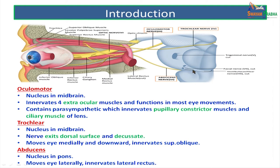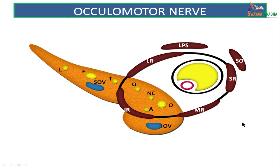The abducent nerve, the nucleus of which is in the lower pons, moves the eye laterally by supplying the lateral rectus. Before going into detail of these nerves, we should know how all these nerves enter into the orbit. All these nerves enter into the orbit via the superior orbital fissure. The superior orbital fissure is divided into three compartments by the tendinous ring of Zinn, which gives origin to all four recti muscles.